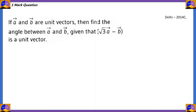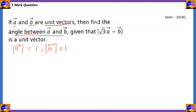Let's look at our next question. If a bar and b bar are unit vectors, find the angle between a bar and b bar, given that √3·a bar minus b bar is a unit vector. We know that modulus of vector a = 1 and modulus of vector b = 1. Since √3·a bar minus b bar is a unit vector, modulus of (√3·a bar − b bar) = 1.